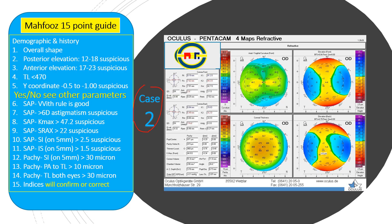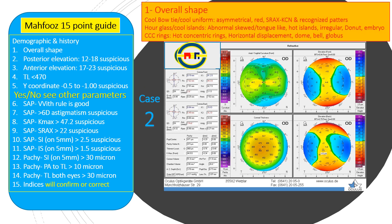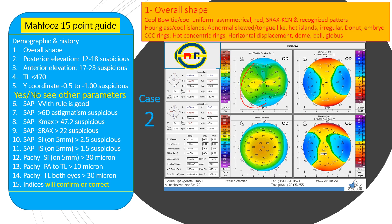In case number two, the overall shape on the sagittal map shows a bow tie which is not as regular as in case one. The posterior and anterior elevation maps have cool islands, but on the pachymetry map the rings are central concentric but not cool — we have hot rings. So we have a slightly irregular bow tie and hot rings, pointing towards abnormality in the cornea.